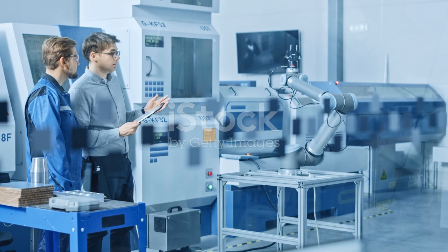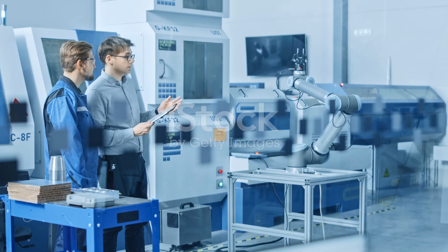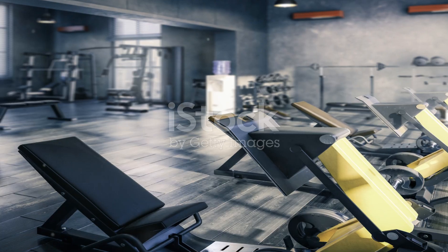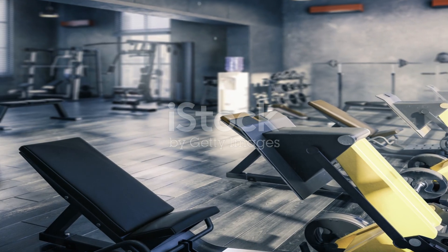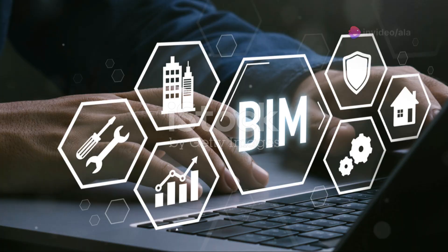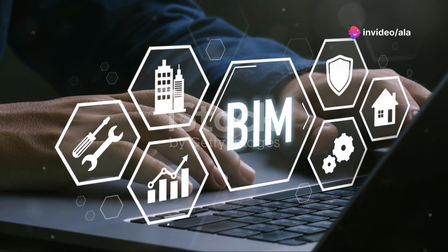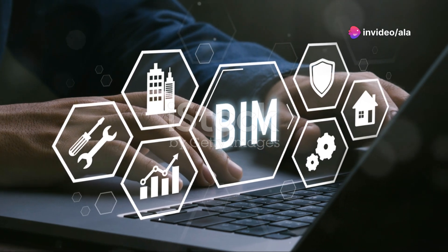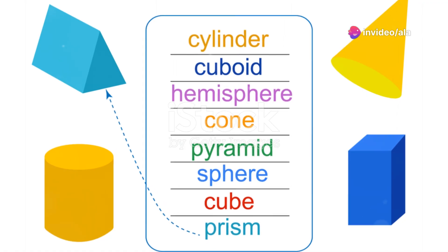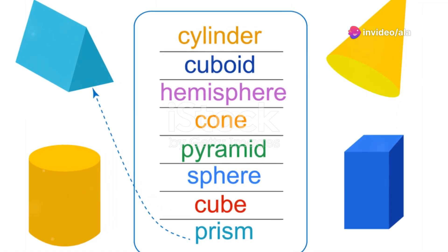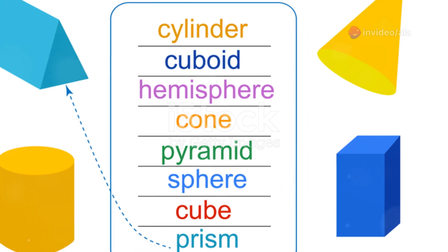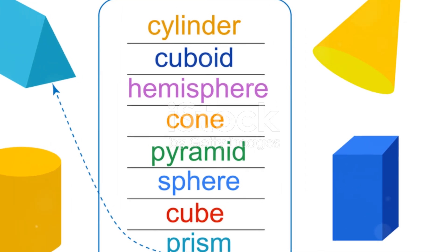Here's where it gets really cool: engineers often use 3D modeling software to bring these concepts to life, allowing them to experiment and iterate designs digitally. This not only speeds up the development process but also helps in identifying potential issues before they become real-world problems.